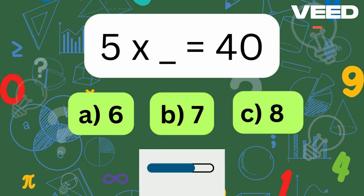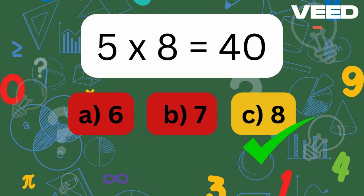5 times what equals 40? Well done, 5 times 8 is equal to 40.